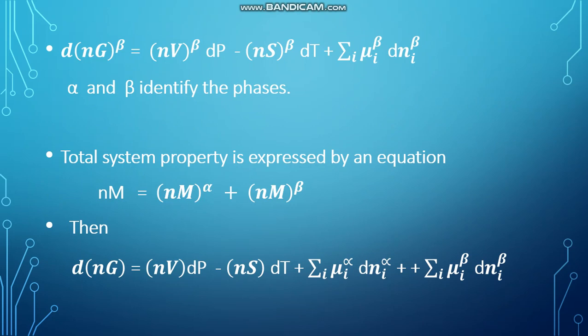For the total system, we can write the property by an equation as nM = (nM)^α + (nM)^β. That means total system property is a combination of the properties of the two phases.